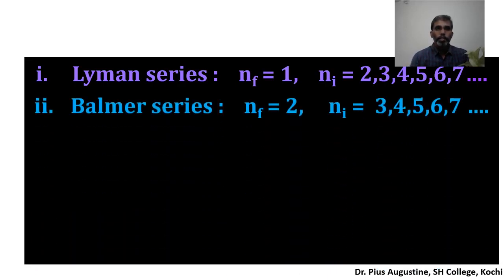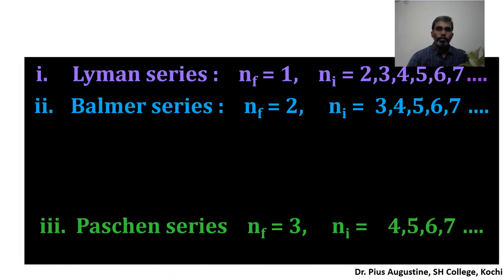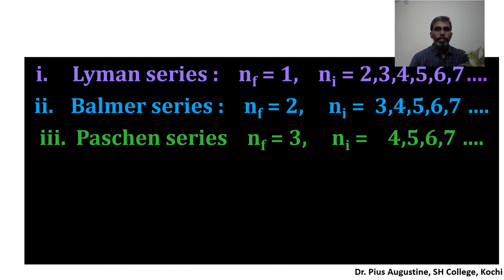Then we have the Balmer series, which lies in the visible range of the hydrogen spectrum. Here electrons jump from higher levels n = 3, 4, 5, 6, etc. to the second orbit (level 2), and you get visible range radiation. If you calculate the wavelength, it will be within approximately 380 nm to below 800 nm — we generally call 400 to 800 nm the visible spectrum, with violet at the lower wavelength end and red at the higher wavelength end.